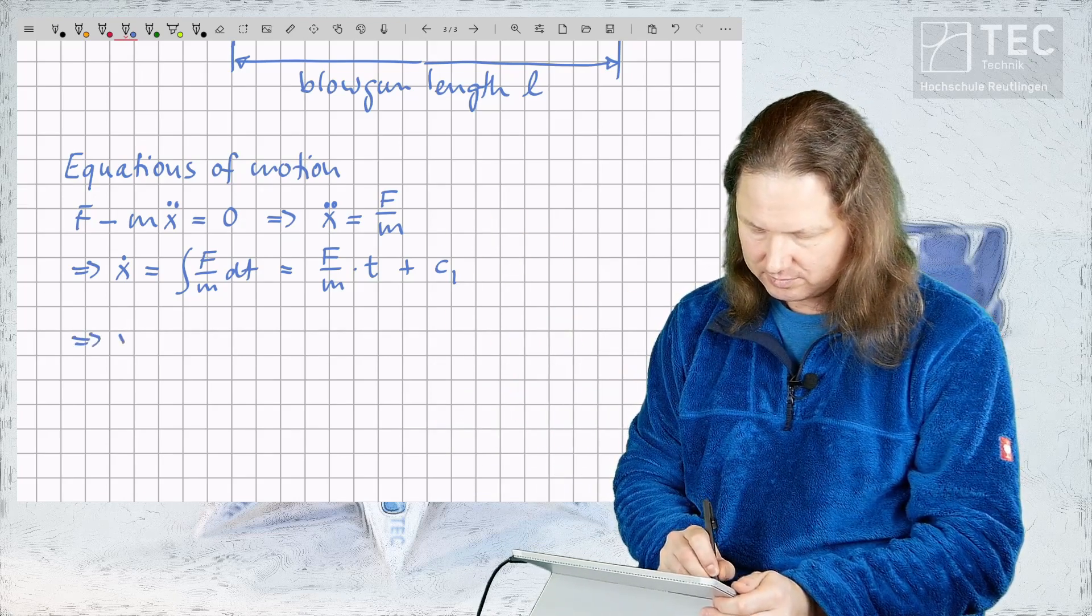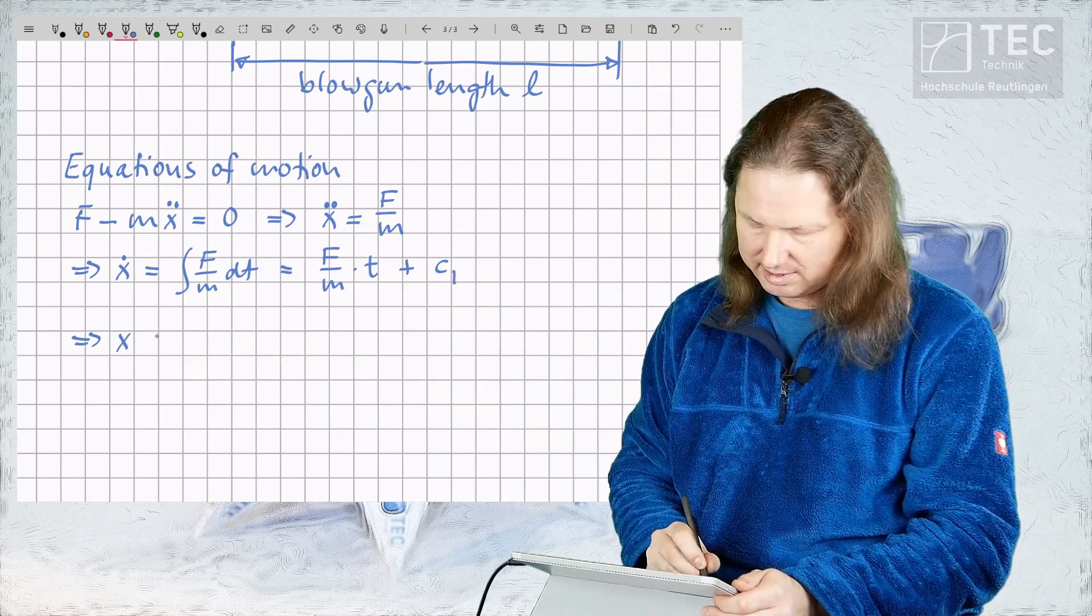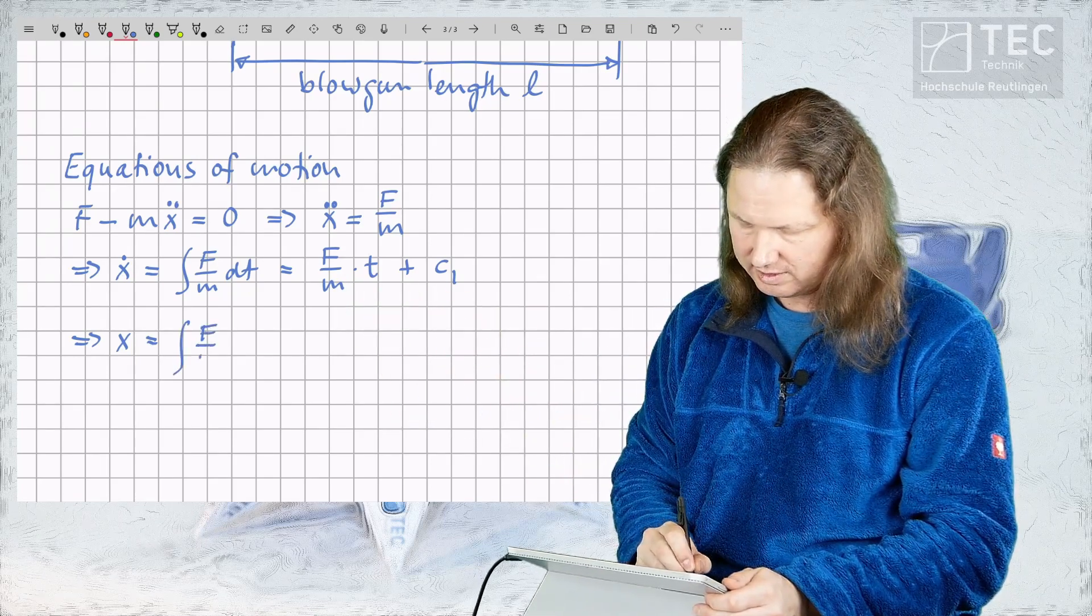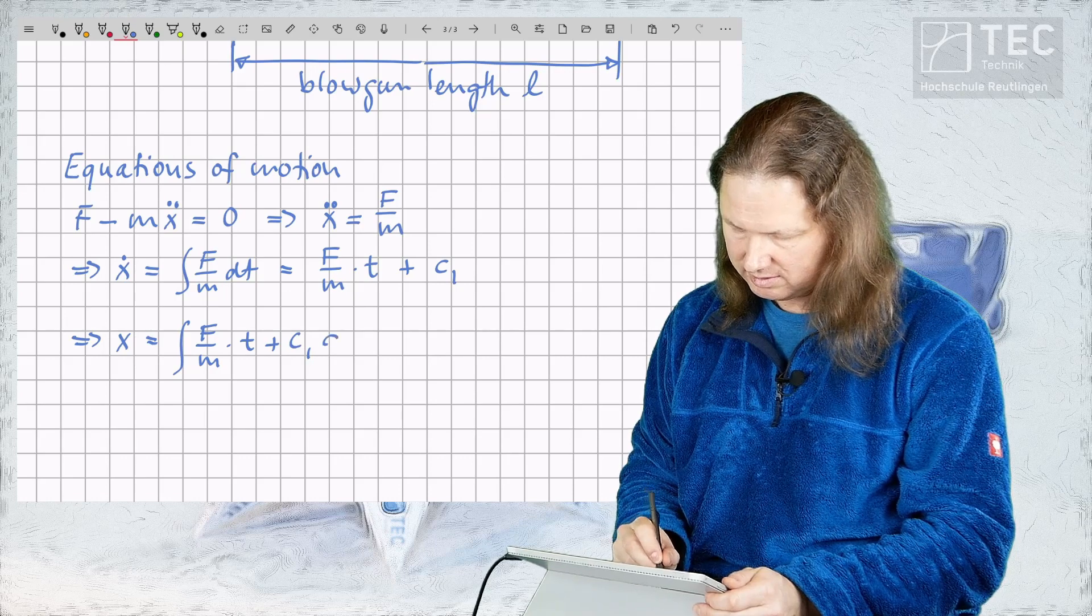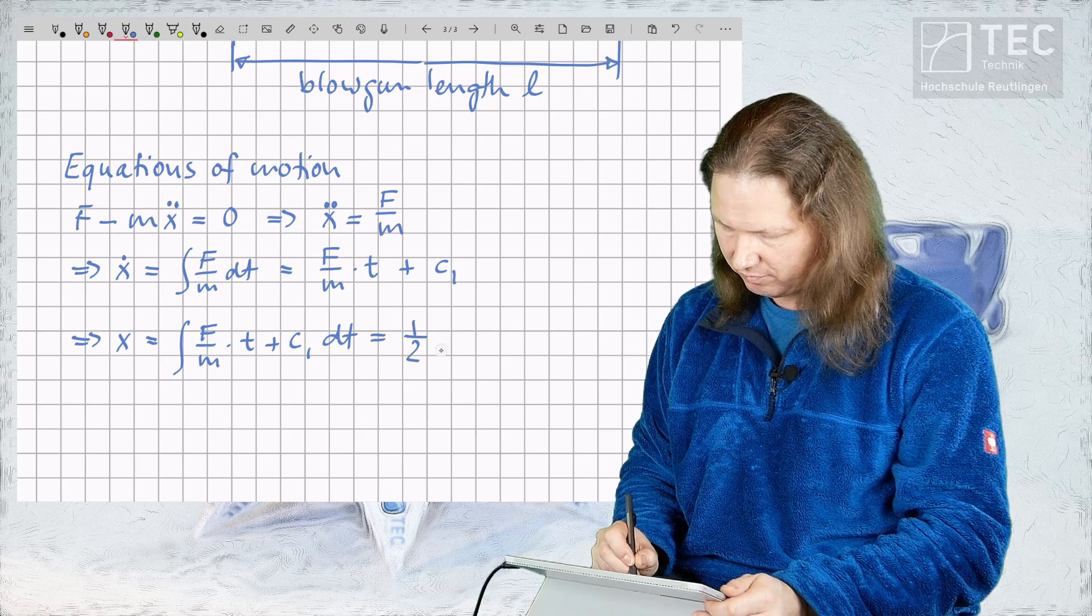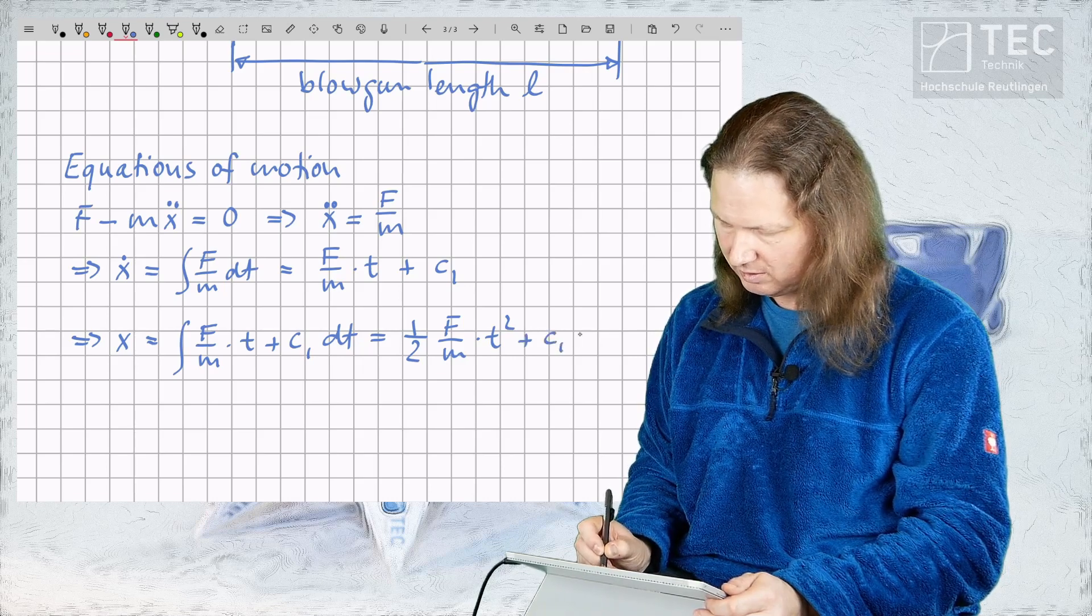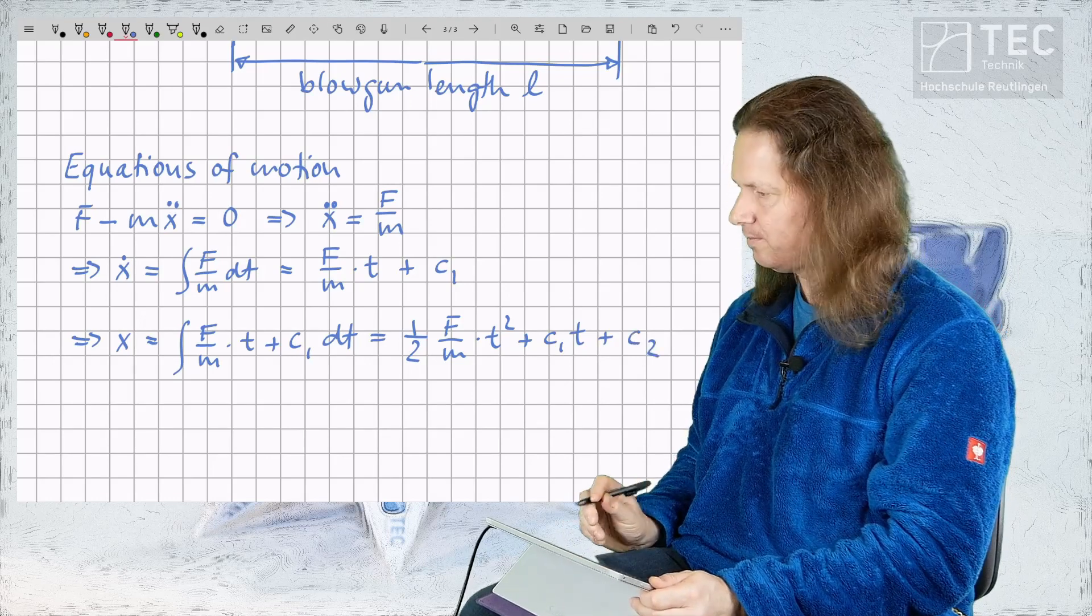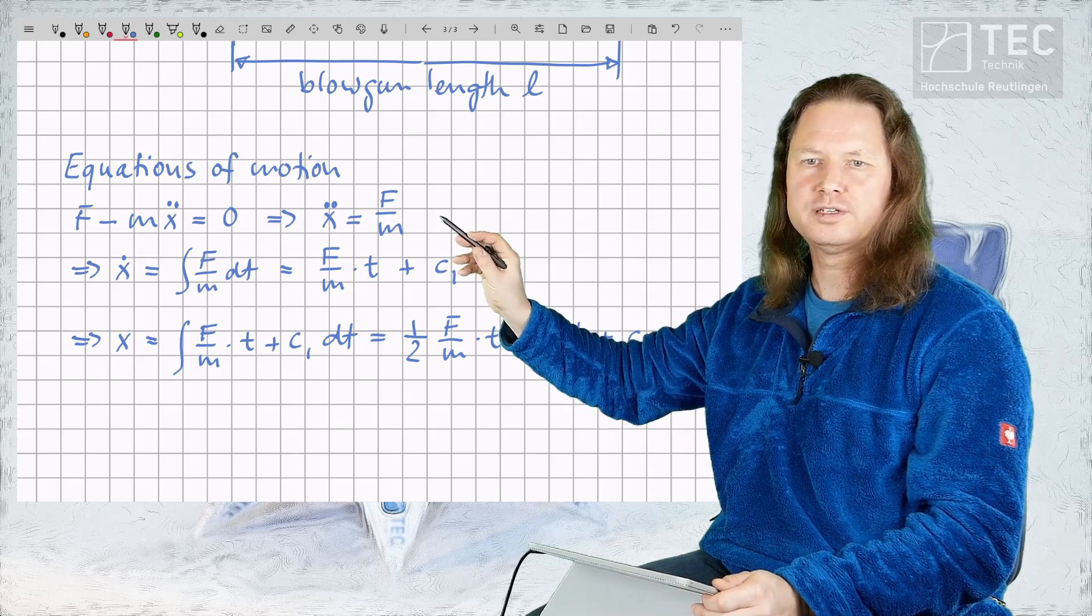The second integration of this equation yields our x position as the integral over this term F divided by M times t plus c1 dt and this yields one half F over M times t squared plus c1 t plus another integration constant c2. This is our general solution to our second order differential equation.